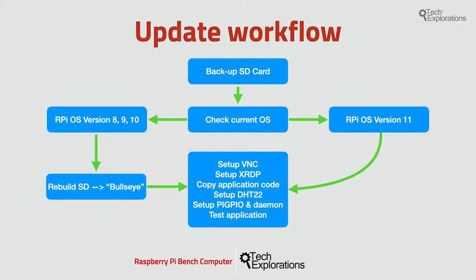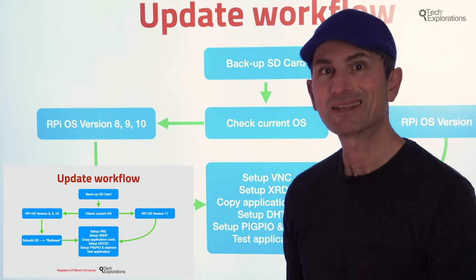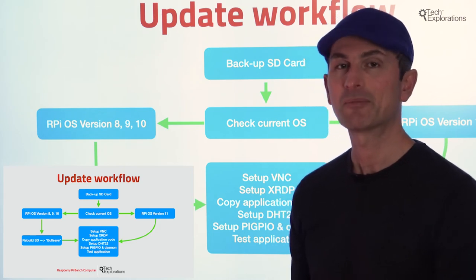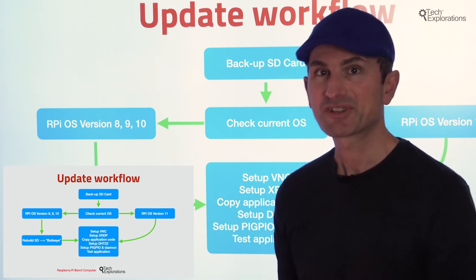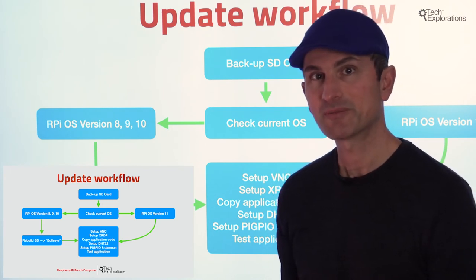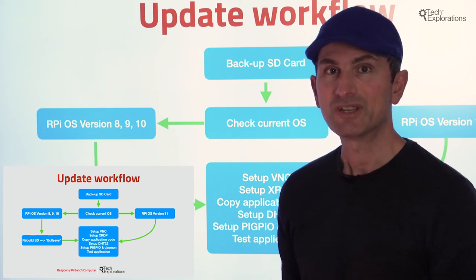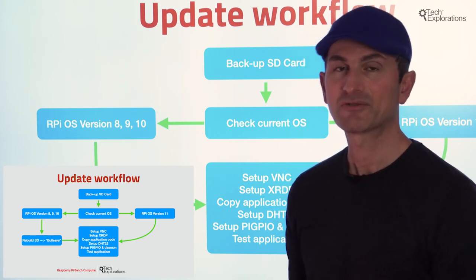If you are new to this course and already running Bullseye, you can skip that part and go straight to the main update process, which begins with the setup of VNC. Once you have Raspberry Pi OS version 11 up and running, we'll start by setting up the VNC remote control server on the Raspberry Pi and the client on your computer. We'll use VNC later to copy the application files.